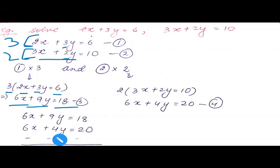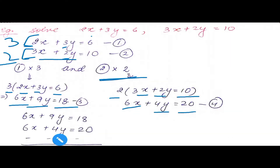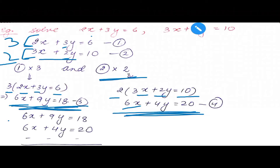Remember, when we multiply an equation, the RHS also gets multiplied. Multiplying the second equation by 2: 6x plus 4y equals 20. Now x coefficients are the same, but the signs are still the same. To make the sign opposite, we can multiply any equation by minus 1. Multiplying the second equation by minus 1: minus 6x minus 4y equals minus 20.